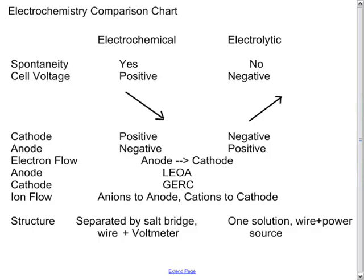The anode and cathode each have their own mnemonics. LEOa: Loss of Electrons is Oxidation at the Anode. GERc: Gain of Electrons is Reduction at the Cathode. This does not change whether you're in an electrochemical or electrolytic cell — it is always the same and forms the basis for electrochemistry.